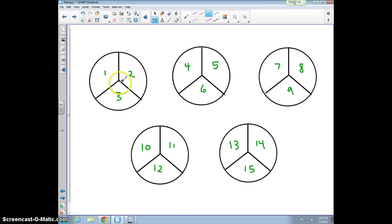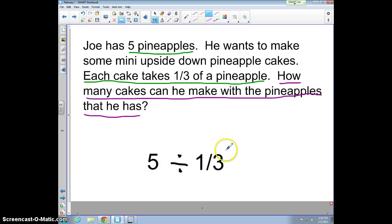So you can tell that we can make fifteen cakes. If we have five pineapples, which Joe does, and if it takes one third of a pineapple for each cake, that means we can make fifteen cakes. And that is our quotient. We've solved the problem. Great job. We're going to continue working this in class tomorrow. Thanks.